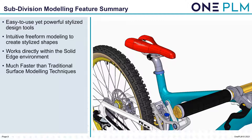So let's have a summary of what we've done. Subdivision modeling provides easy-to-use yet powerful stylized design tools — intuitive freeform modeling to create stylized shapes. It allows us to select faces, edges, drag, rotate, and use lots of different tools. It's directly within the Solid Edge environment so we don't need a separate program. It's much faster than traditional surfacing modeling techniques. For that saddle, using traditional methods we'd have to create several different sections, by-rails, and different options to get that shape — subdivision allowed us to create it very quickly.